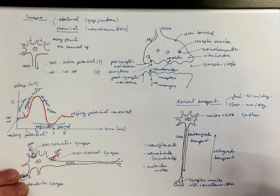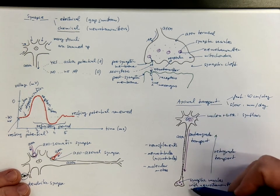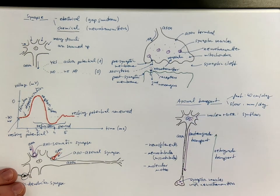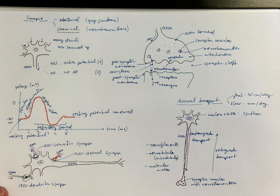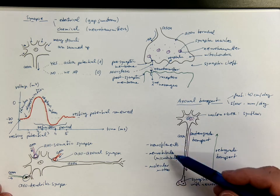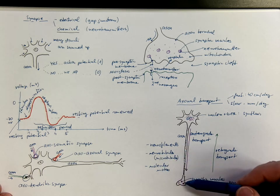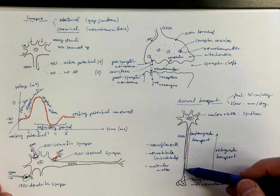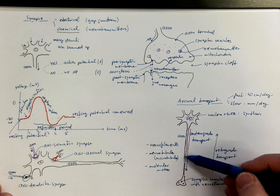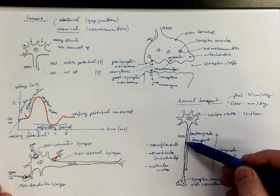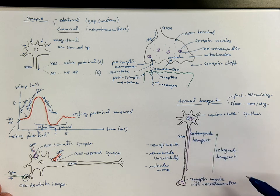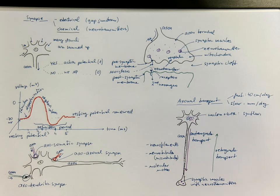There are more mechanisms of axonal transport. An interesting thing is that the cytoskeleton can also be used by some viruses to travel to the cell bodies and spread within the nervous tissue.